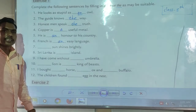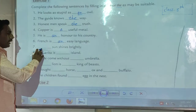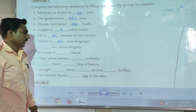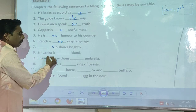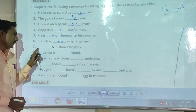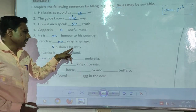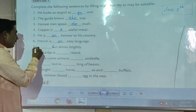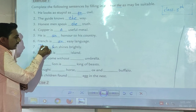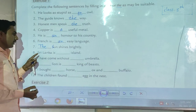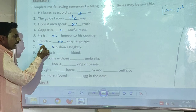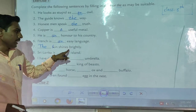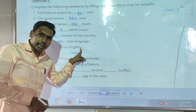Now the seventh example: '___ sun shines brightly.' Here, 'sun' should be capitalized. According to the sentence meaning, here we use the article 'the.' The complete sentence is: 'The sun shines brightly.'